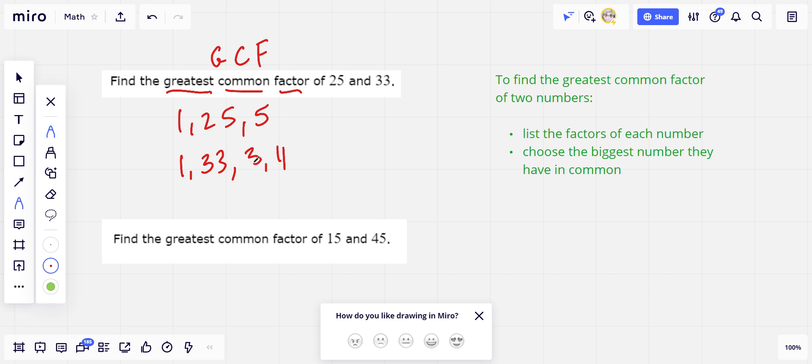So now we've got complete lists of all the factors of 25 and of 33. And we have to pick the biggest number they have in common. The biggest number these have in common is actually 1, the smallest number possible. So the greatest common factor of 25 and 33 is 1.